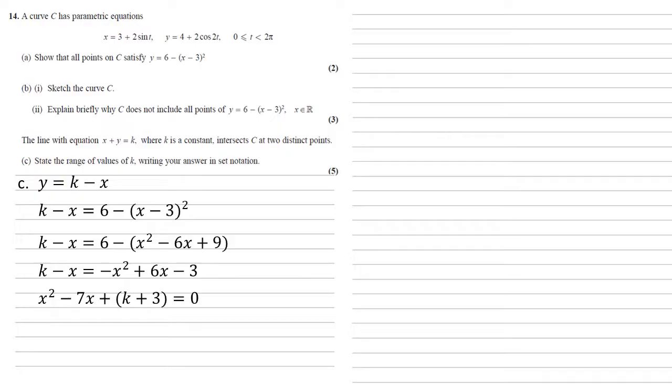Now we know it's got two distinct points where the lines intersect, hence our quadratic needs to have two answers. Now think of our quadratic equation. For a quadratic to have two answers, the b squared minus 4ac part needs to be larger than zero.